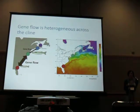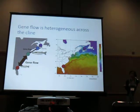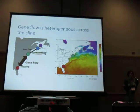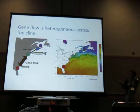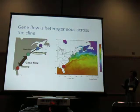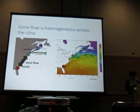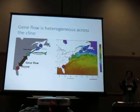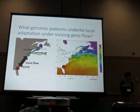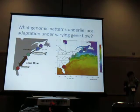Previous studies, as well as some preliminary data from demographic modeling, suggest that gene flow is heterogeneous across the cline. The southern coastline between Florida and Massachusetts is pretty well connected and probably has relatively high rates of gene flow. But complex coastlines partially isolate the Gulf of Maine from the Gulf of St. Lawrence, which sets up some interesting heterogeneity across this adaptive cline and creates a unique opportunity to understand the genomic patterns underlying local adaptation under varying levels of gene flow.